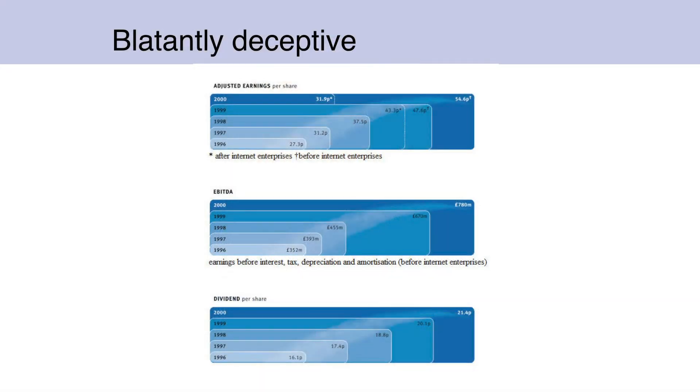This graph is blatantly deceptive. I found it in a corporate annual report. Let's look at the dividends per share, the bottom one. We go from 1996 to 2000, and we go from 16 pence to 21 pence.